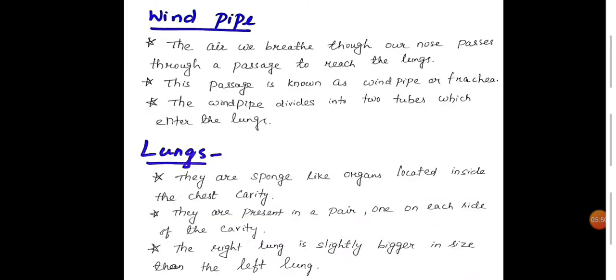Windpipe: Air that we breathe through our nose passes through a passage to reach the lungs. This passage is known as windpipe or trachea. The windpipe divides into two tubes which enters the lungs.